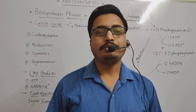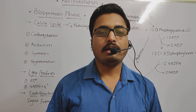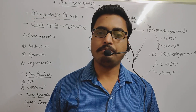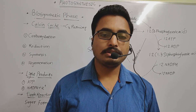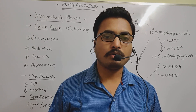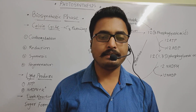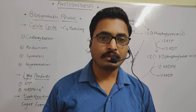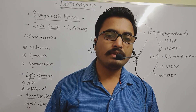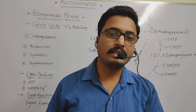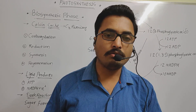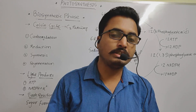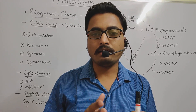Hello students. As you know, we are learning about a very important lesson known as photosynthesis in higher plants. In our last session, we completed the chemiosmotic hypothesis, which is related to the formation of ATP molecules in the chloroplast. After the completion of that concept, the light reactions were completed. Today we will start another concept — the second part of this lesson — known as dark reactions.